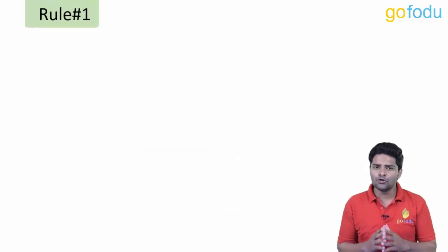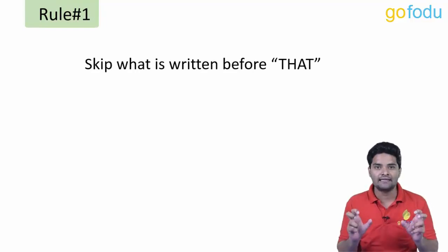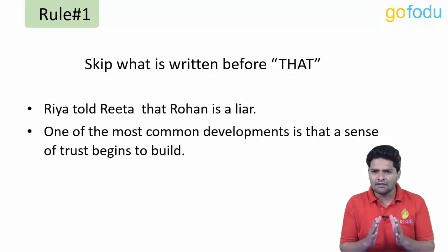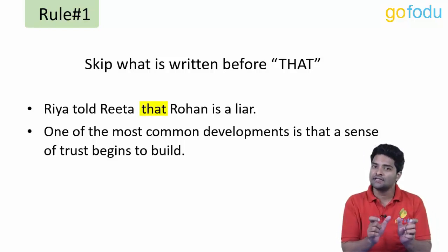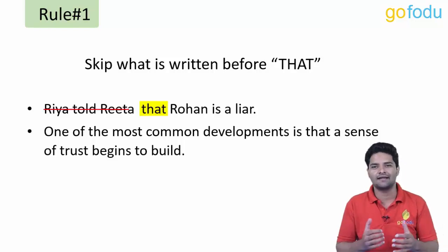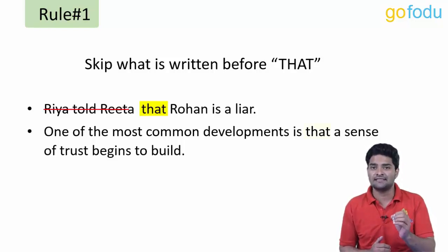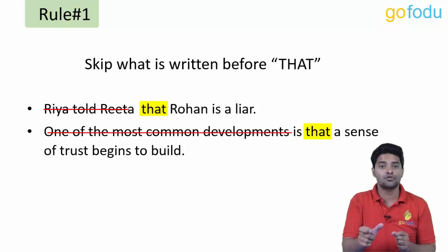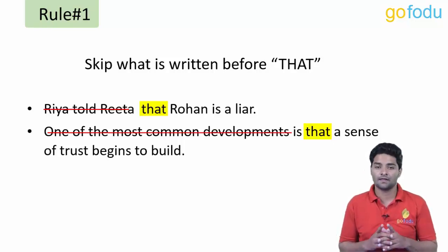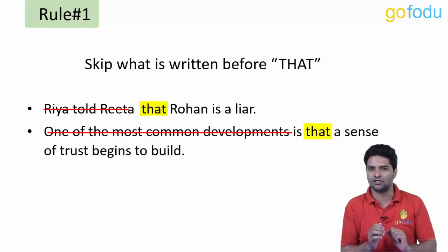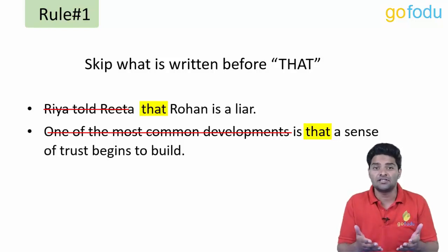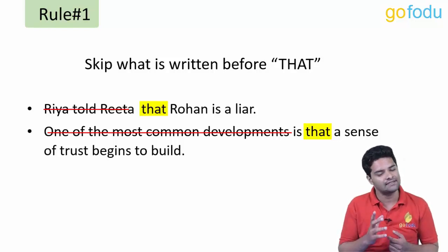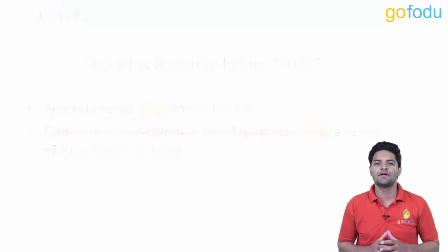Most of the time, only what is written after the word 'that' is important for us. For example: 'Rhea told Rita that Rohan is a liar' — the relevant information is that Rohan is a liar; who told whom is irrelevant. This rule applies when a sentence has the structure 'so-and-so said that' or 'so-and-so's research revealed that' — in such sentences, what is written after 'that' is important.